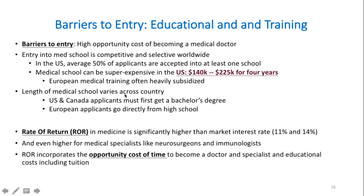The length of medical school varies. In the United States and Canada, you must obtain a bachelor's degree before entering medical school, while in European countries you can go directly from high school. The rate of return in medicine is significantly higher than the market interest rate — about 11 to 14% — meaning the investment in medical school pays off well. This rate is even higher for specialists like neurosurgeons and immunologists.